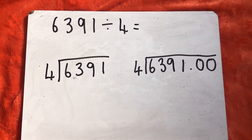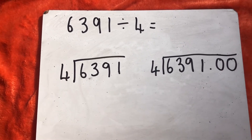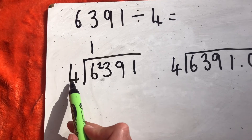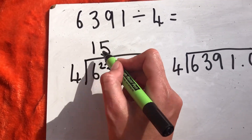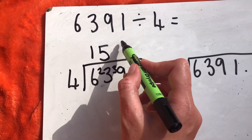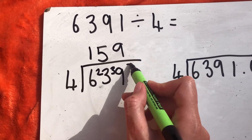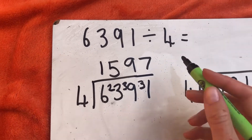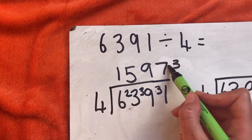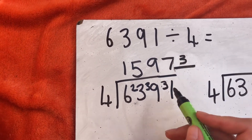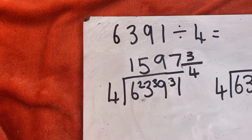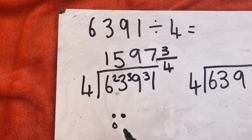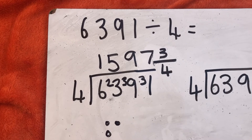Now let's look at an example where we get a remainder. We're going to do 6,391 divided by 4. How many 4s go into 6? There is 1 with 2 left over. How many 4s go into 23? There are 5 with 3 left over. How many 4s go into 39? There are 9 — 9 times 4 is 36 — so 3 left over. How many 4s in 31? There are 7 — 7 times 4 is 28 — so 3 left over. I could write remainder 3, or I could show I understand I've got 3 left out of a full group of 4. Maybe it's 4 people and I've got 3 left when there should have been a full group of 4. So I've got 3 quarters.